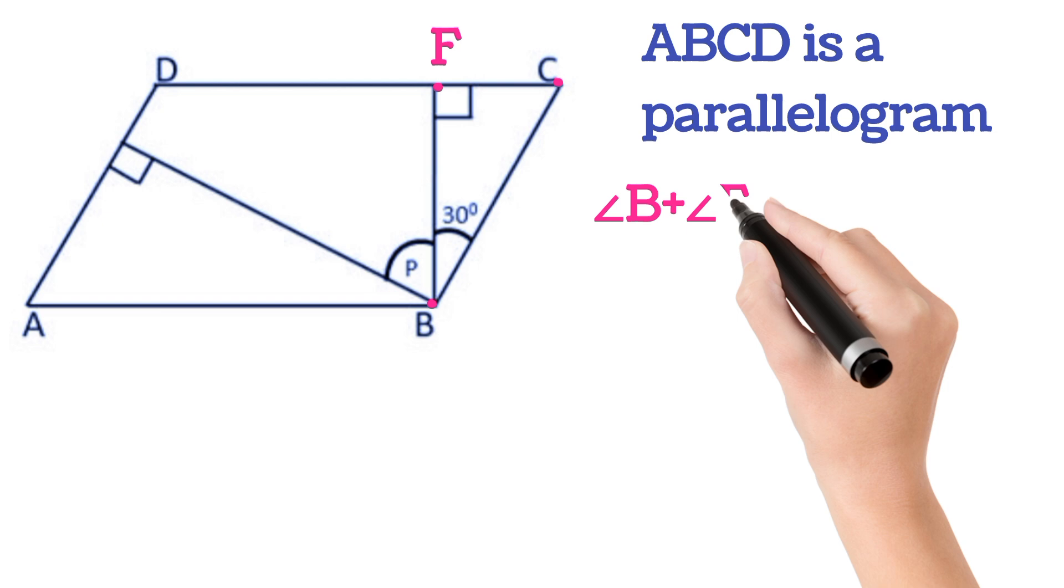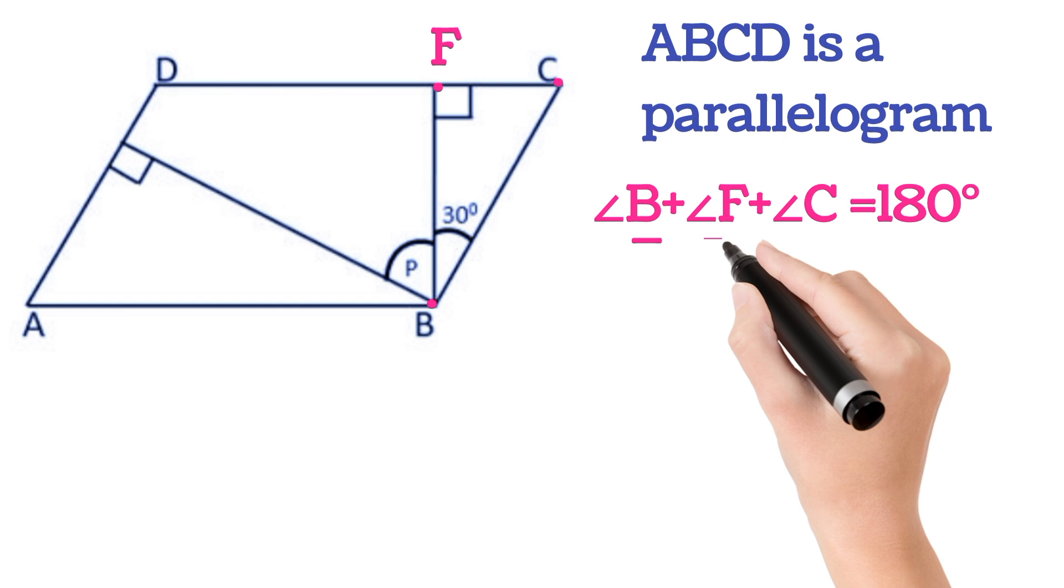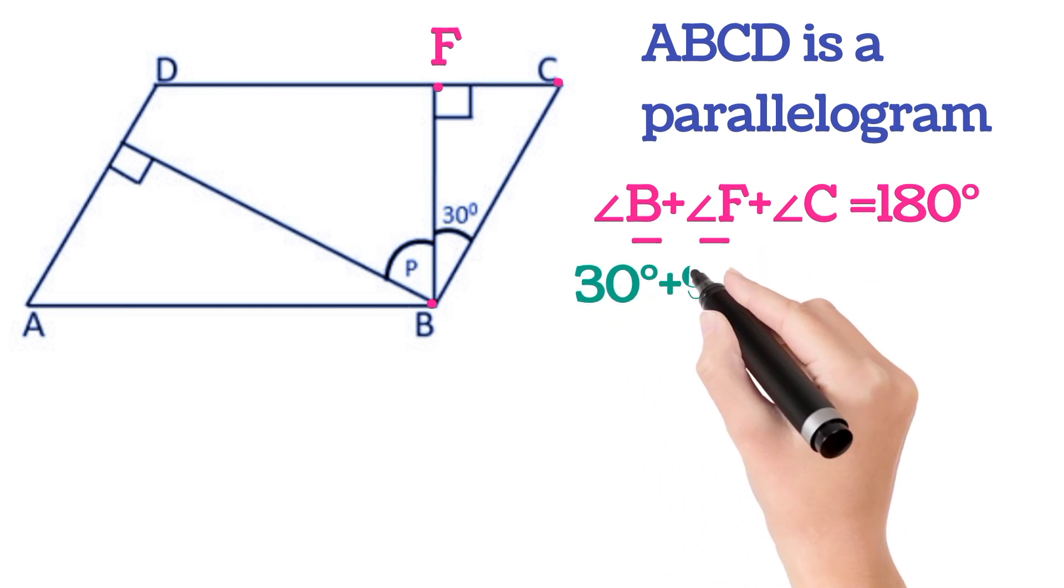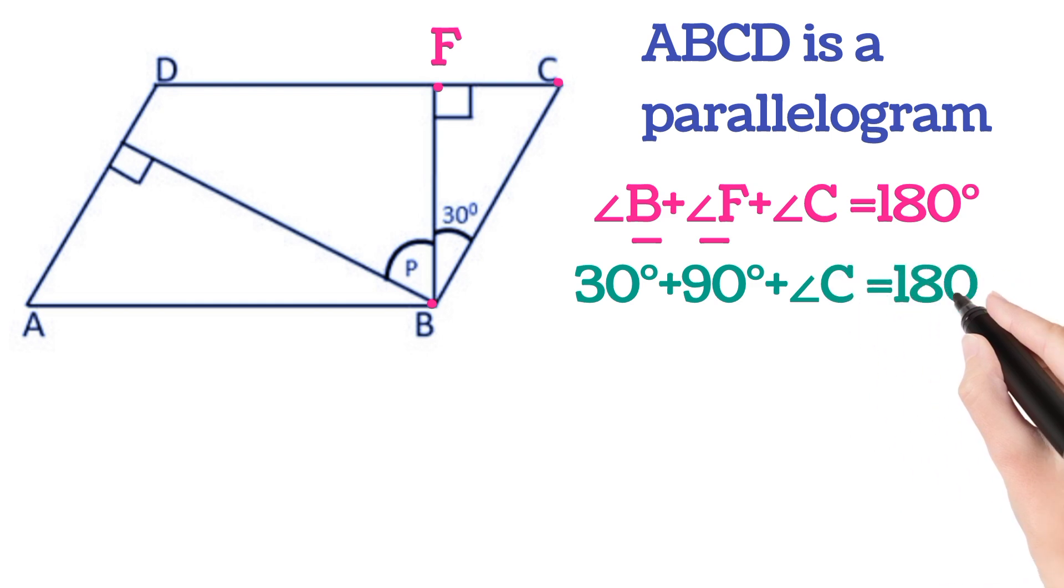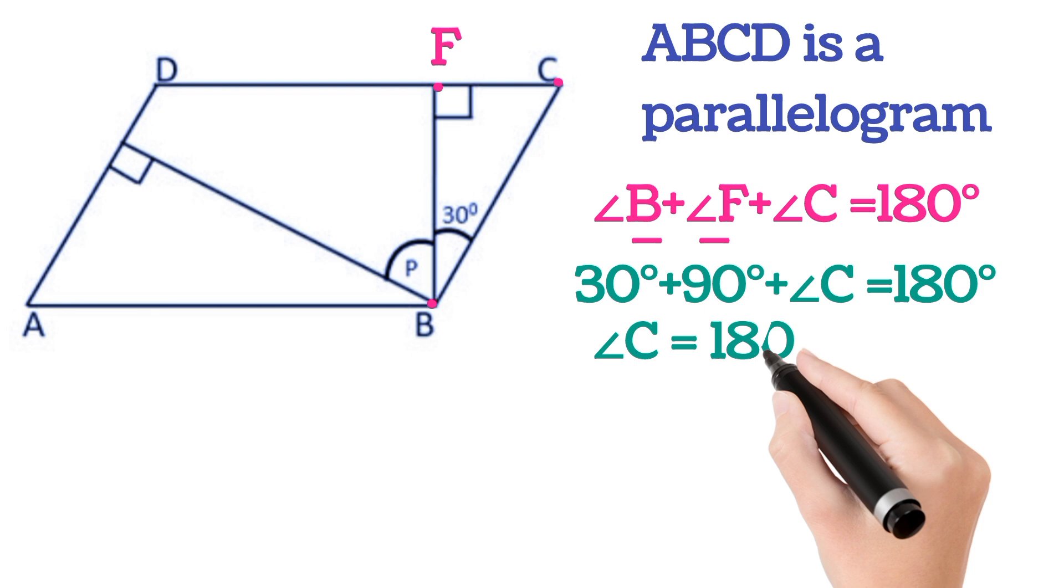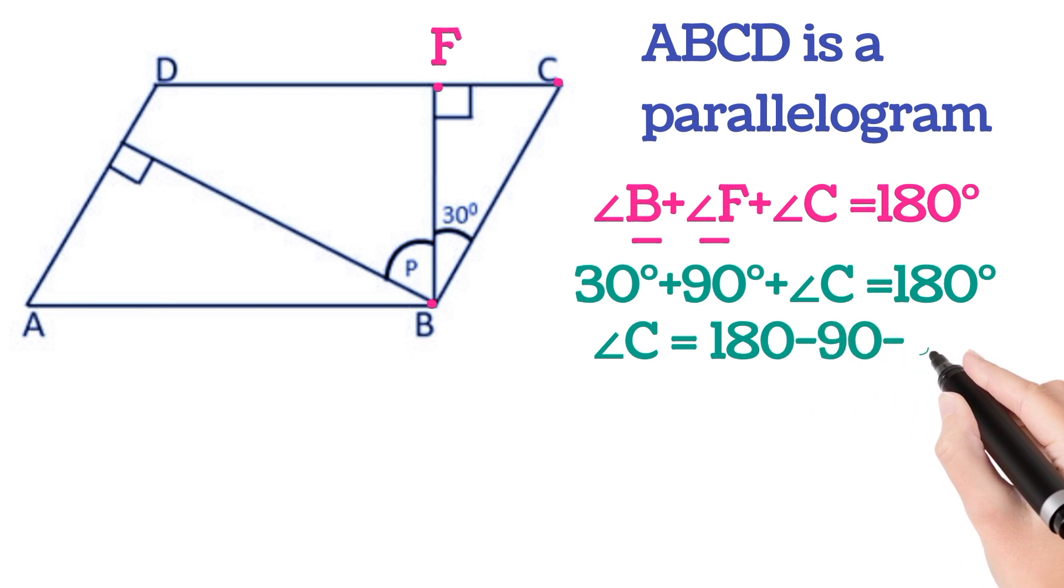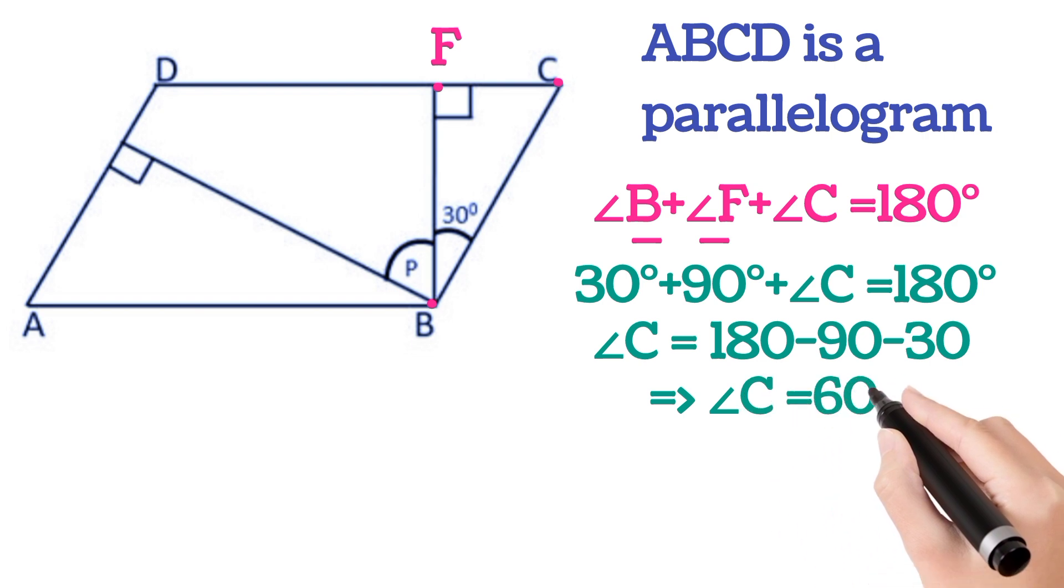Here angle B plus angle F plus angle C will be 180 degrees by angle sum property. B and F are given. Substituting the values we will get 30 plus 90 plus angle C is equal to 180 degrees. That is angle C is equal to 180 minus 90 minus 30. This implies angle C is equal to 60 degrees.